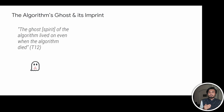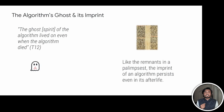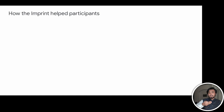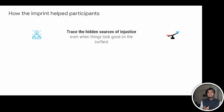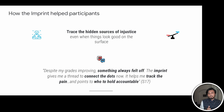You may be wondering: how did the imprint help our participants? This becomes clearer in the second round of interviews. Here's one way it really helped them: it helped them trace the hidden sources of injustice even when things looked good on the surface. As one student encapsulates this point beautifully: 'Despite my grades improving, something always felt off. The imprint gives me a thread to connect the dots now. It helps me track the pain and points to who to hold accountable.'